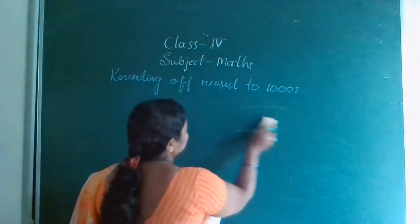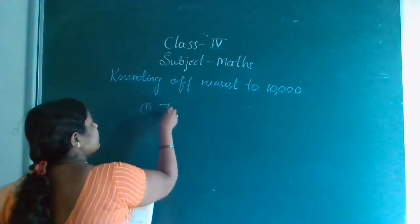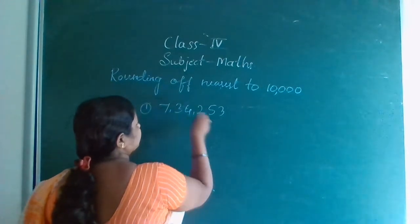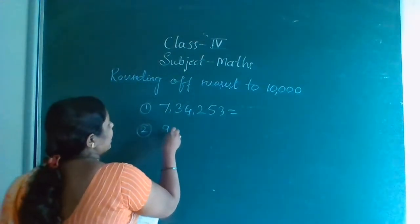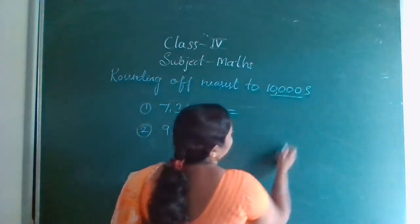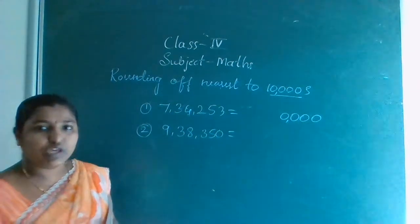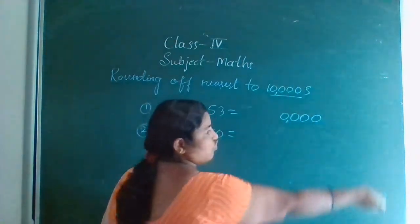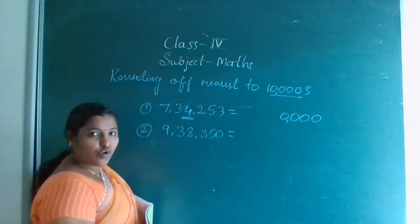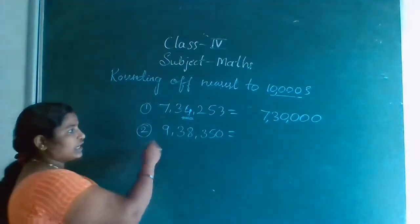Now I will teach rounding to nearest 10,000. Take examples: 7,38,253 and 9,38,350. So 10,000 is having how many zeros? 4 zeros. After 3 numbers, give comma, then 2 digits. 10,000 before place is 1000's place, so look at the 1000's place. For 7,38,253, the 1000's place is 4, which is less than 5, so the next number — don't change anything.